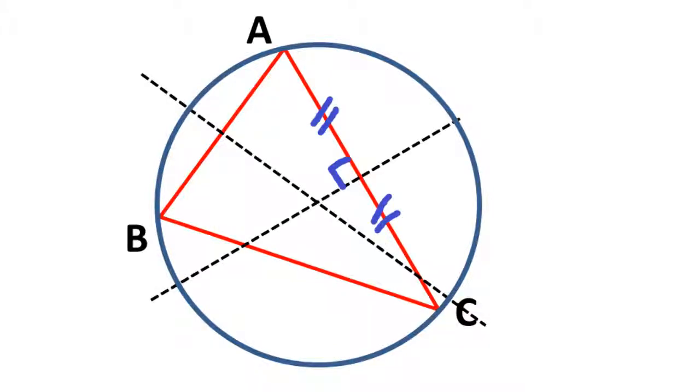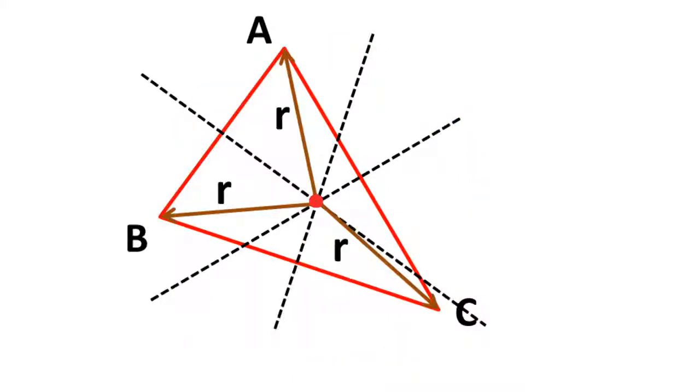The point where these two meet is the centre of the circle. We can continue and draw the perpendicular bisector of the side BC, and these three perpendicular bisectors will meet at the centre of the circle.